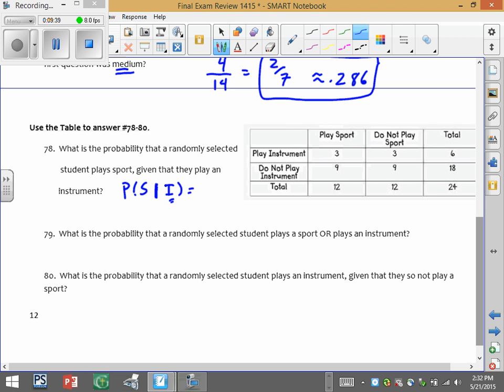So we know that they play an instrument. So out of those that play an instrument, there are 6 of those. So how many of those play sports? It's 3 out of the 6 or 1 half. Again, if you do decimals, you use 0.5.